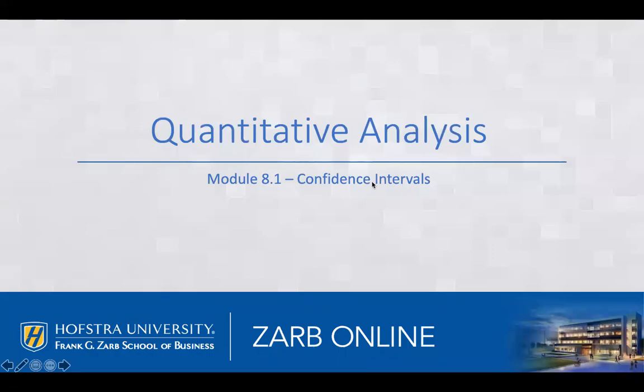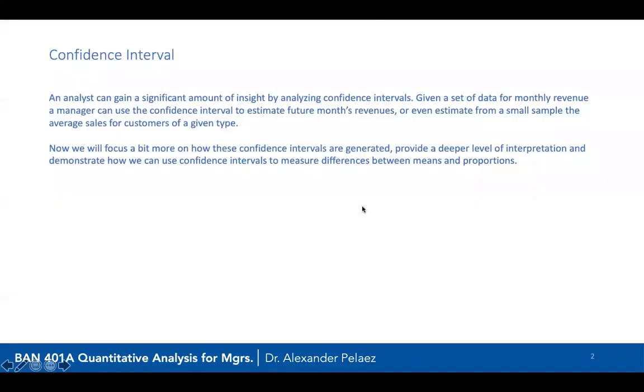We're going to talk about confidence intervals. We've talked about sampling, and what we're discussing here is whether we can create a plus-or-minus for a given mean. We have a sample mean and we're trying to predict whether that sample mean is representative of the population mean. We know there's some error, so we're going to create a lower bound and an upper bound that we say we're 95% sure the population mean will fall within.